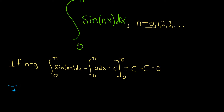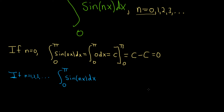Now let's look at the case when n equals 1, 2, 3, and so on. We have the definite integral from 0 to pi of the sine of nx dx. When we integrate sine of nx, we get negative cosine of nx divided by n, evaluated from 0 to pi.